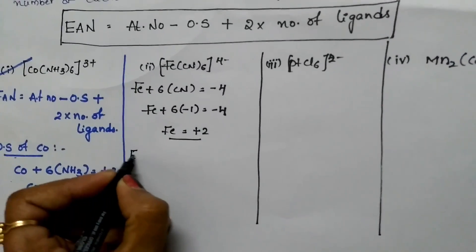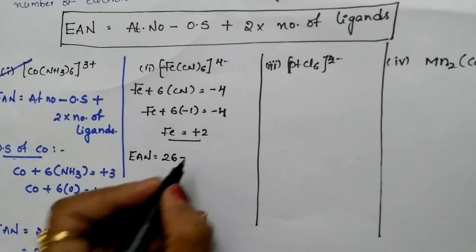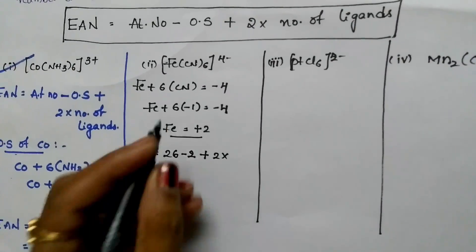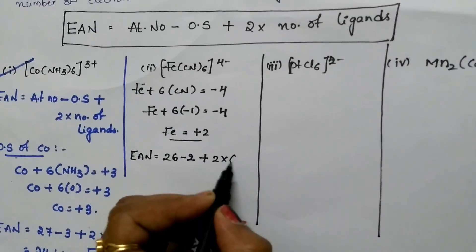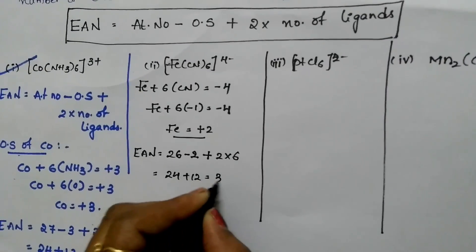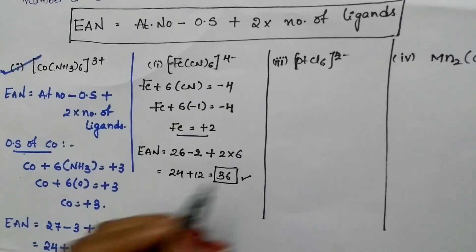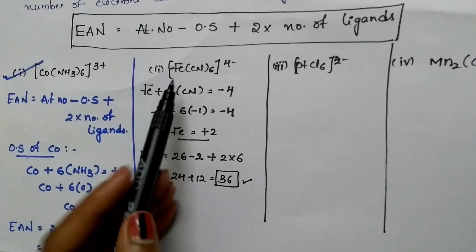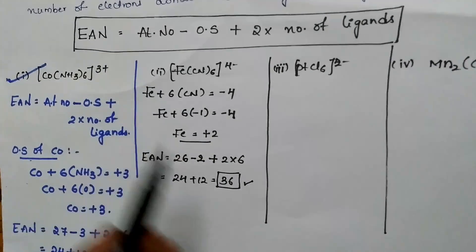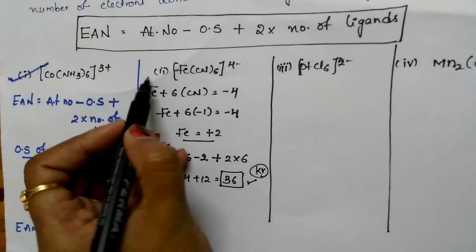EAN = atomic number of iron (26) minus oxidation state (2), plus 2 times number of ligands (6): 26 − 2 = 24, plus 12 equals 36. The EAN of Fe(CN)6⁴⁻ is 36, which is the atomic number of krypton, the nearest noble gas to iron. So Fe(CN)6⁴⁻ is stable.